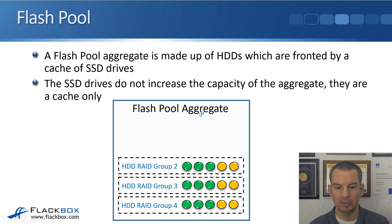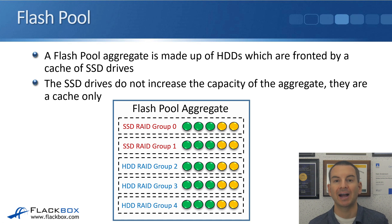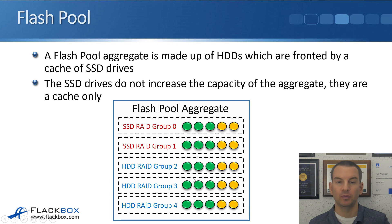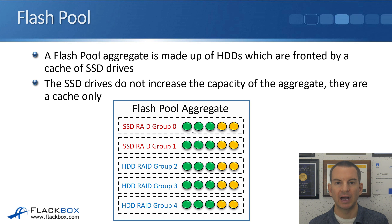Looking at the aggregate in the diagram, I have three spinning disk RAID groups. Each RAID group is one terabyte, so three terabytes total of spinning disks. I add SSDs in front as a cache — each 500 gigabytes, giving one terabyte of SSD. The size of this aggregate is not four terabytes; it is three terabytes. The SSDs are used as a cache only — they do not add to the usable capacity of that aggregate.